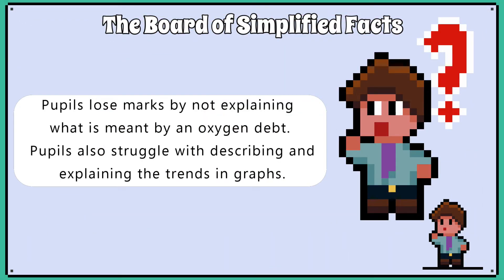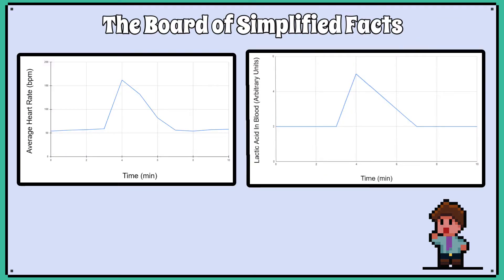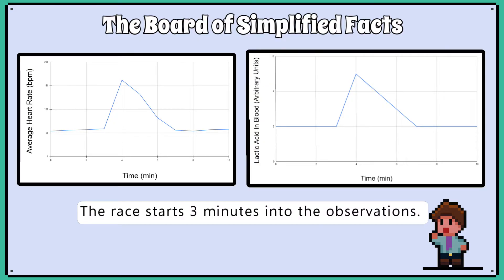Exam questions on this topic are answered poorly because you normally have to interpret awkward-looking data into strong exam-friendly answers. This data shows us the heart rate and the lactic acid in blood of an athlete before, during and after a 200-metre sprint. The race started at the 3-minute mark and lasted around 25 seconds.